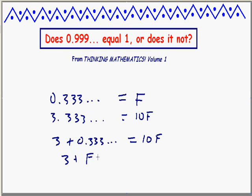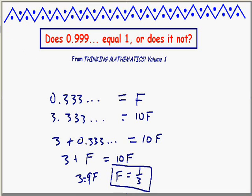Well, three plus, what's this guy? Oh, that's Frederica again, is ten Fredericas. So let's subtract Frederica from both sides. Three equals nine Fredericas, gives me Frederica is three ninths or one third. There it is.